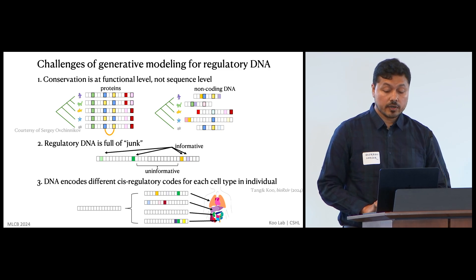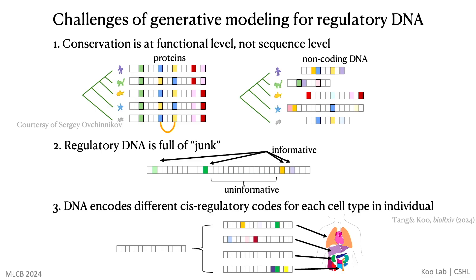Generative modeling for regulatory DNA sequences is quite challenging. While VAEs, GANs, and LLMs work so well for protein sequences, they often struggle with regulatory genomics. That's because regulatory sequences are characterized by high variability in their positions, their lengths, and compositions. Evolutionary constraints are not imposed at the sequence level, but rather at the functional level — diverse arrangements of strong and weak motifs can produce the same functional outcome, which means that regulatory DNA can drift quite a bit, so they are quite diverged across species.